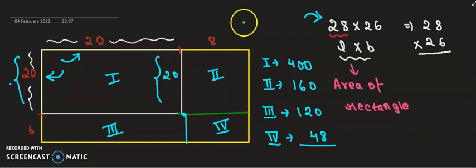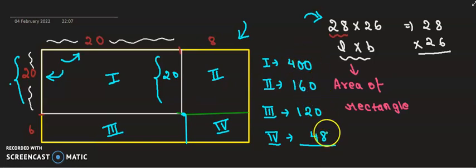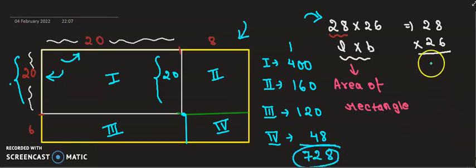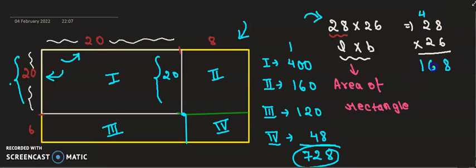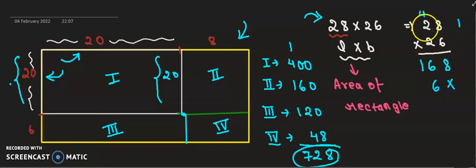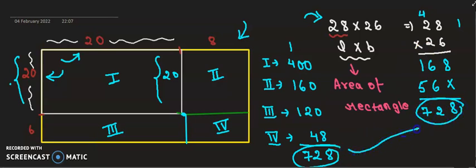Now, to calculate the area of the bigger rectangle, we need to add all these areas: 400 plus 160 plus 120 plus 48. Adding these gives us 728. Now let us see whether we get 728 by using normal multiplication. So 6 into 8 is 48, carry 4; 6 into 2 is 12 plus 4 is 16; then 8 into 2 is 16, carry 1; 2 into 2 is 4 plus 1 is 5. Adding: we get 728. We are getting the same answer — 728!